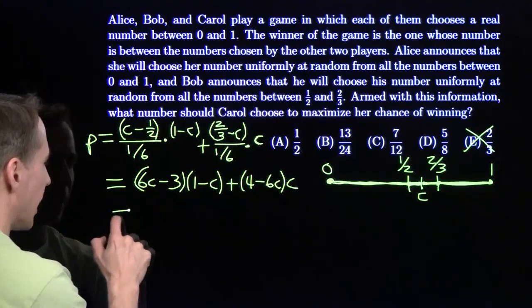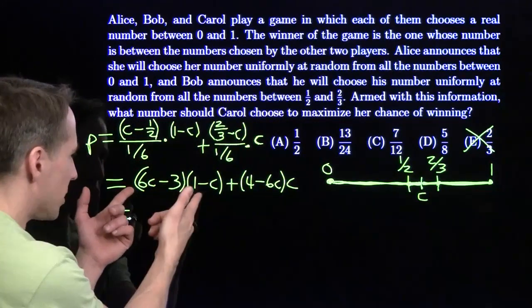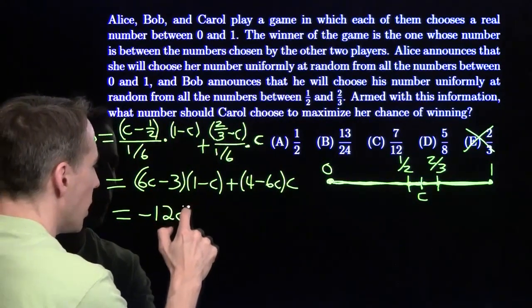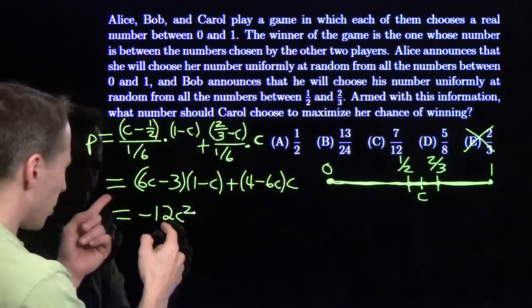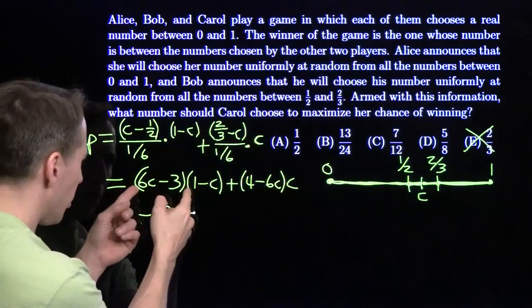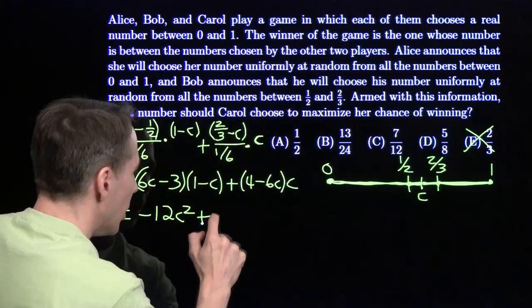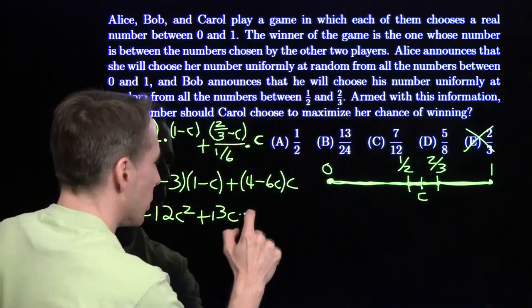I'm going to multiply this out to get that quadratic. I've got -6C² and another -6C², so -12C². For my C terms, I've got 6C + 3C, that's 9C, and 4 more C, so +13C. And I've got -3.